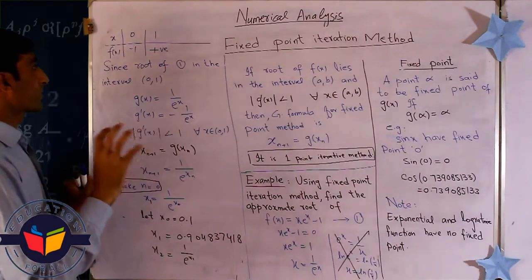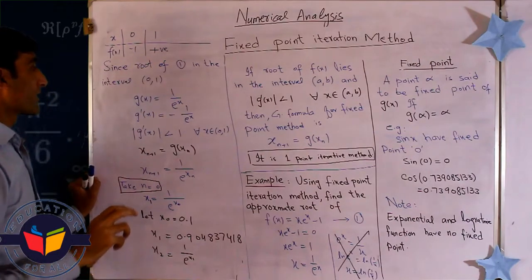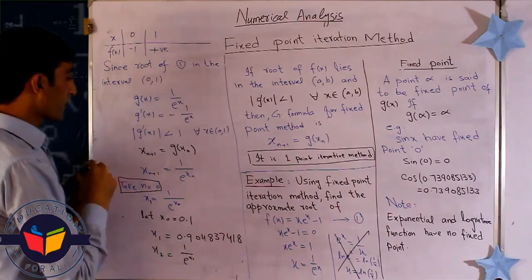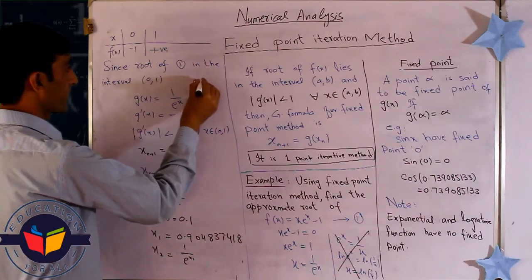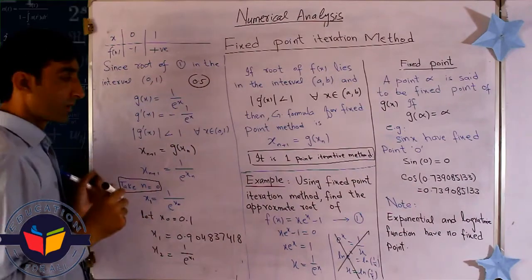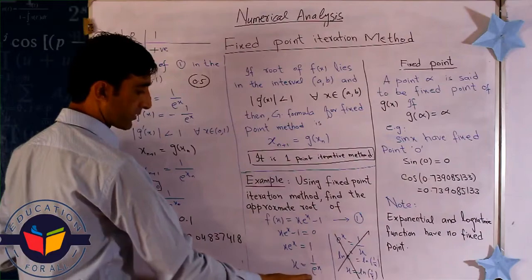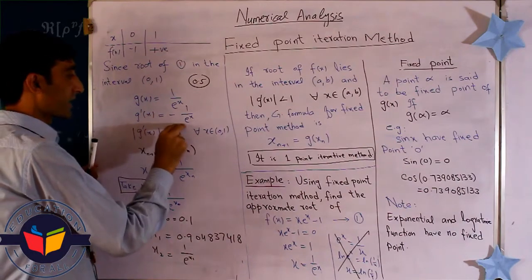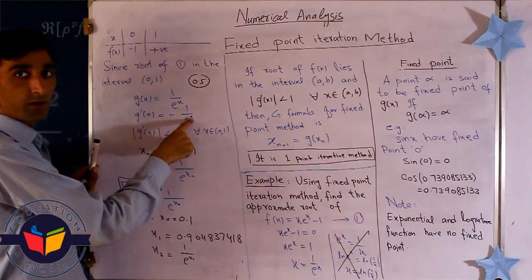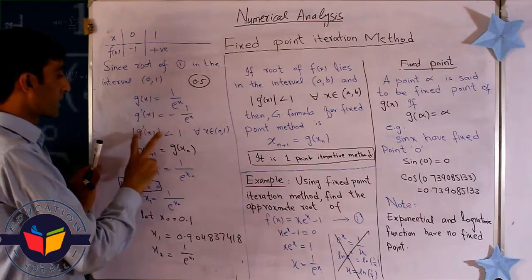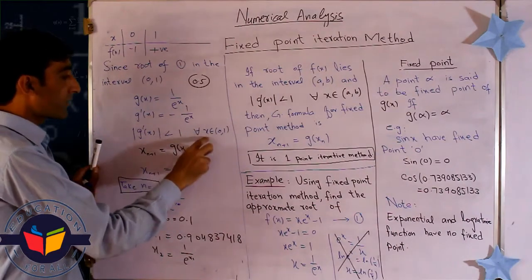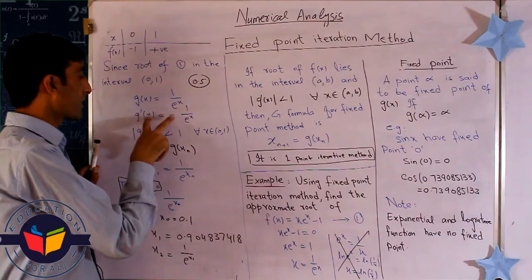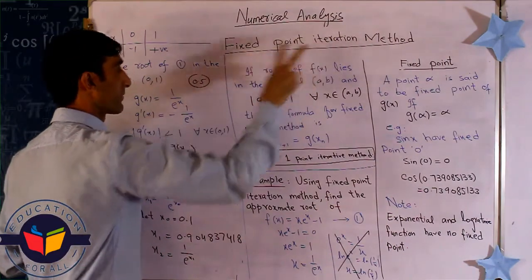Now we choose a test value, say x = 0.5, from the interval (0, 1). For g(x) = 1/e^x, we take the derivative and substitute x = 0.5. The result shows that the modulus of g'(x) is less than 1 for all values between 0 and 1, so this condition is satisfied and this is the best choice for the fixed point iterative method.